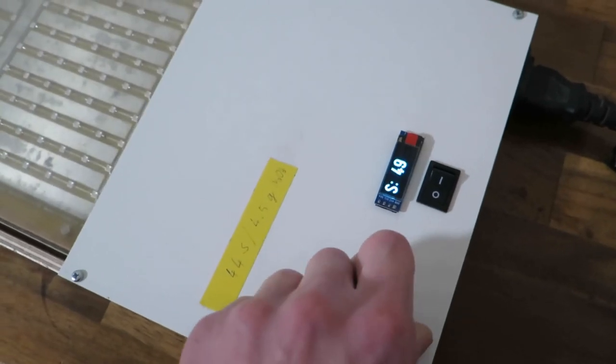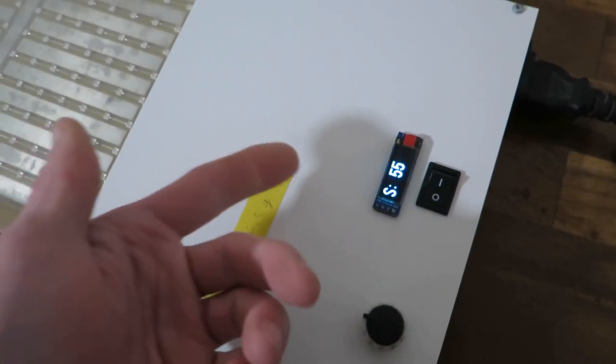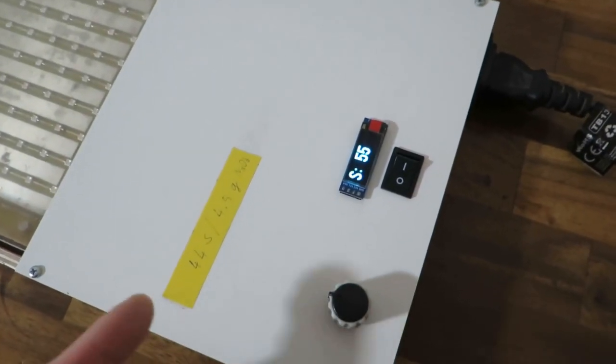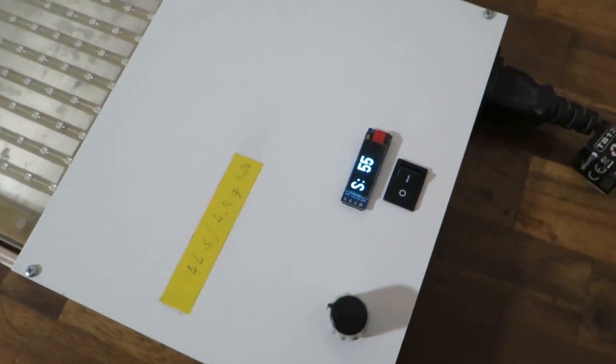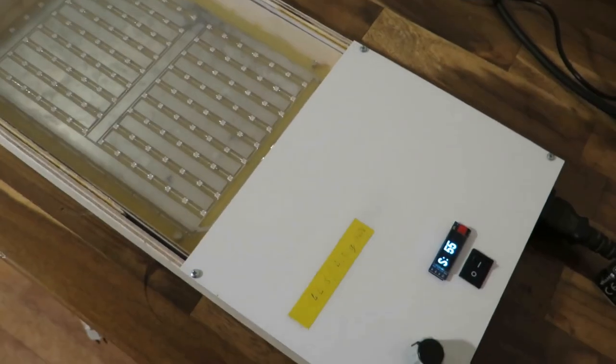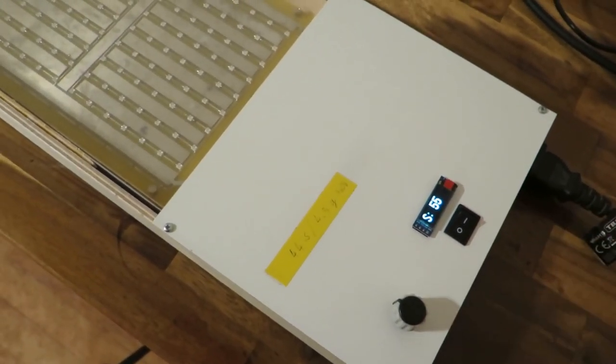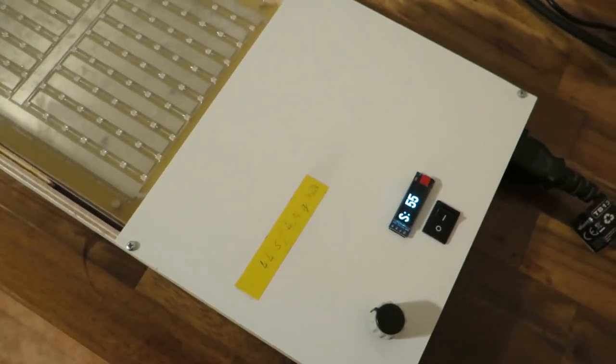There is just a potentiometer to set the time and this is really enough because I don't really need much more. And this is a button to start and stop the exposure. It will stop automatically but you have to reset it and then it will work again.